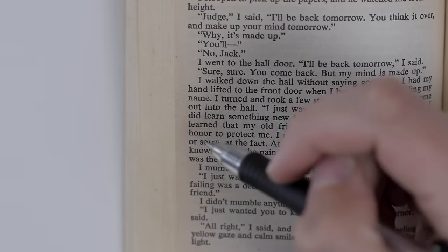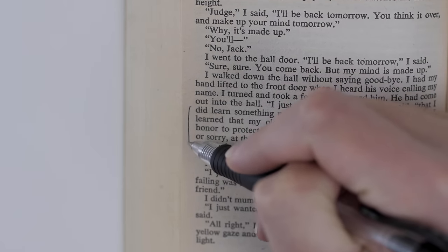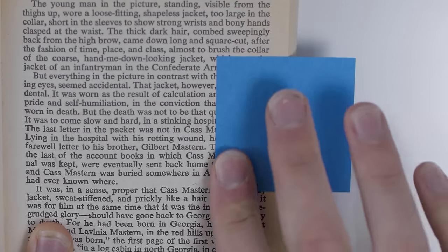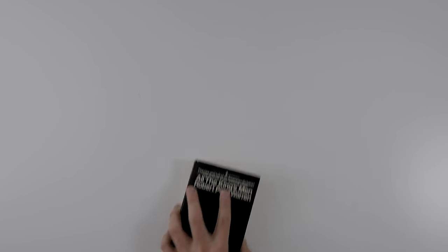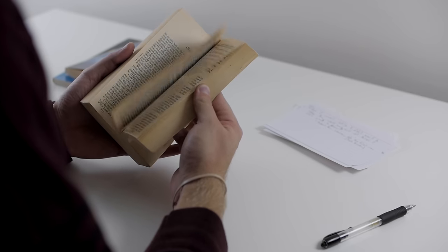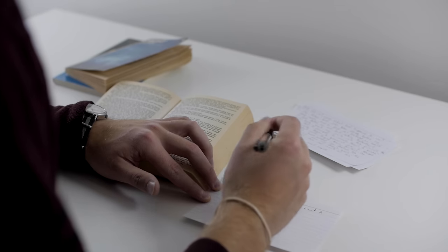As you read, make note of passages that stand out to you. Highlight them, underline them, sticky note them, whatever you like. Once you finish the book, wait a couple of weeks before you return to it. And then flip back through the highlighted passages and transfer them to 4x6 note cards.